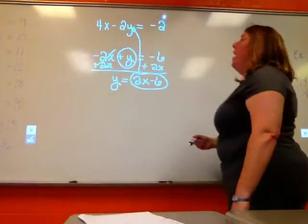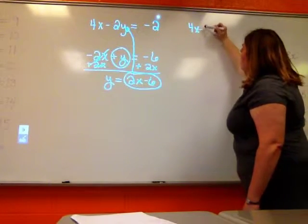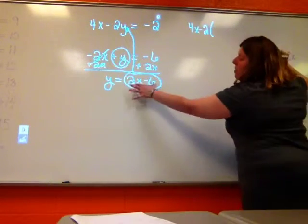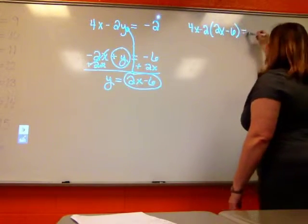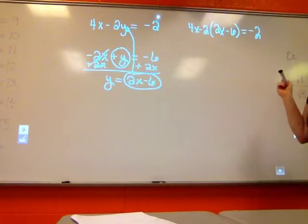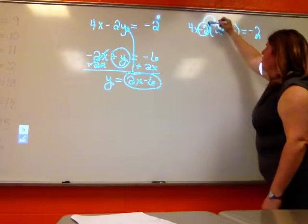So when I have my problem, I'm going to have 4x minus 2 times this whole thing, 2x minus 6, and that equals negative 2. Now I'm going to distribute my negative 2. It's a negative, so make sure you're careful.